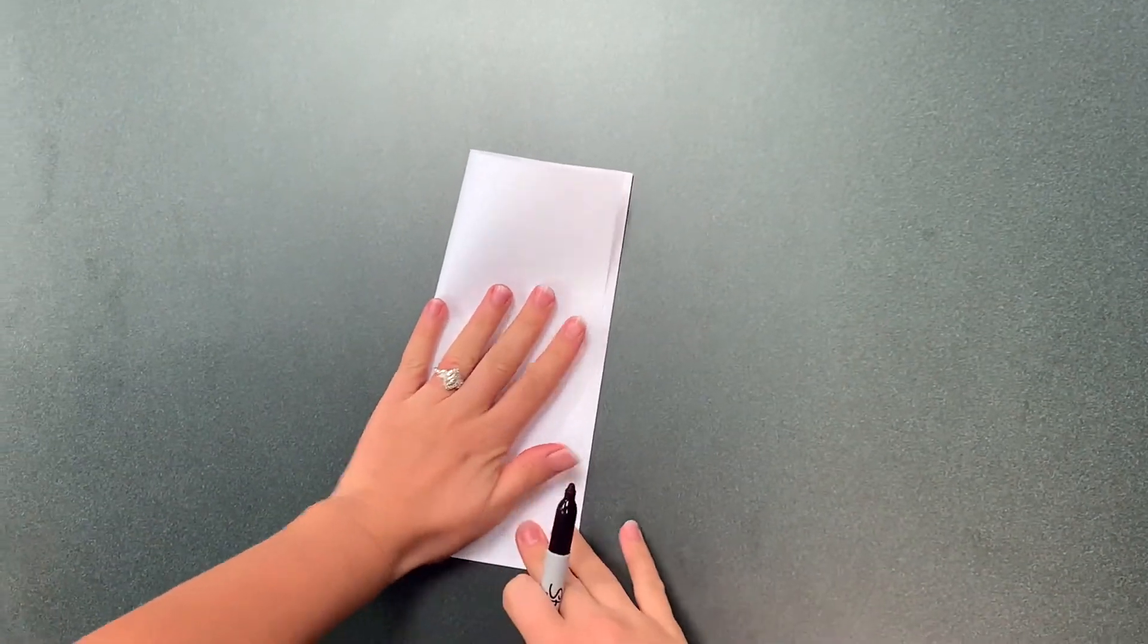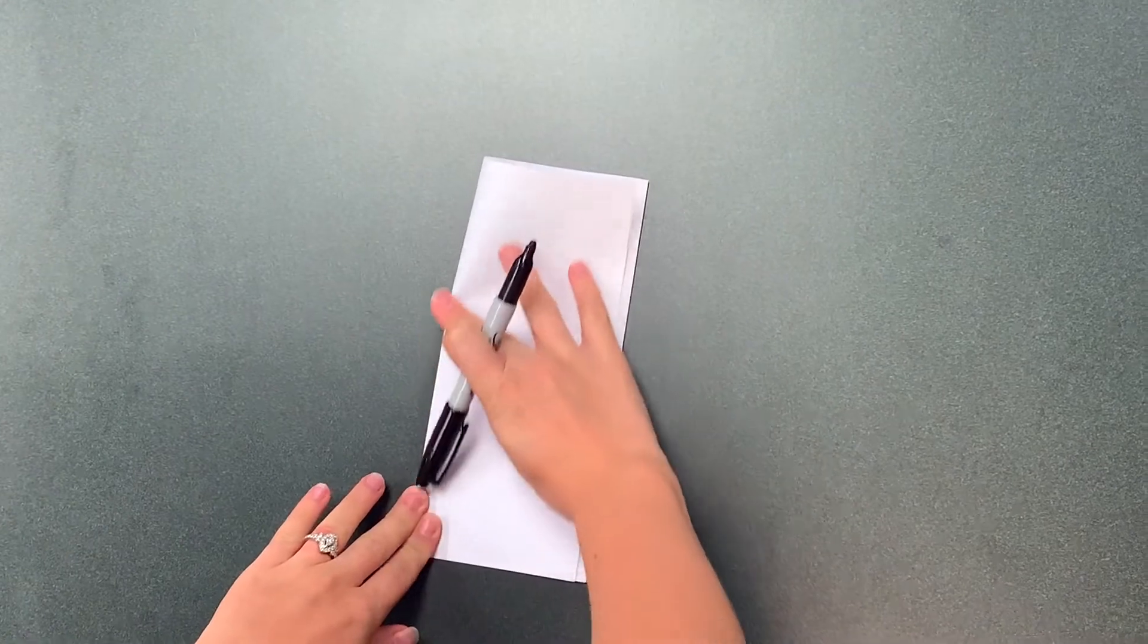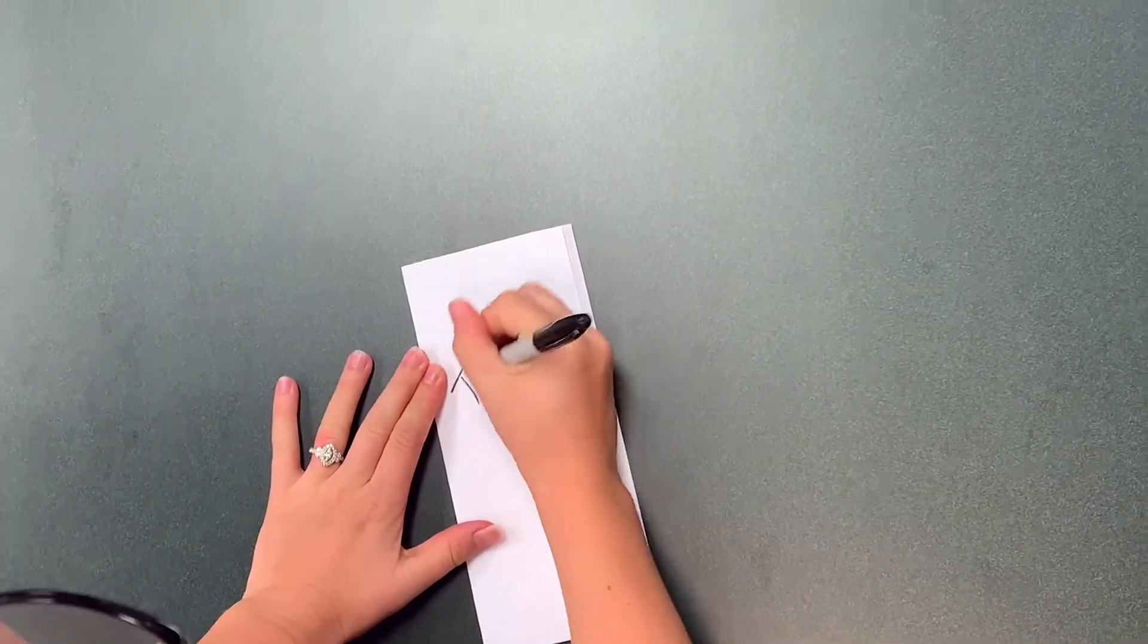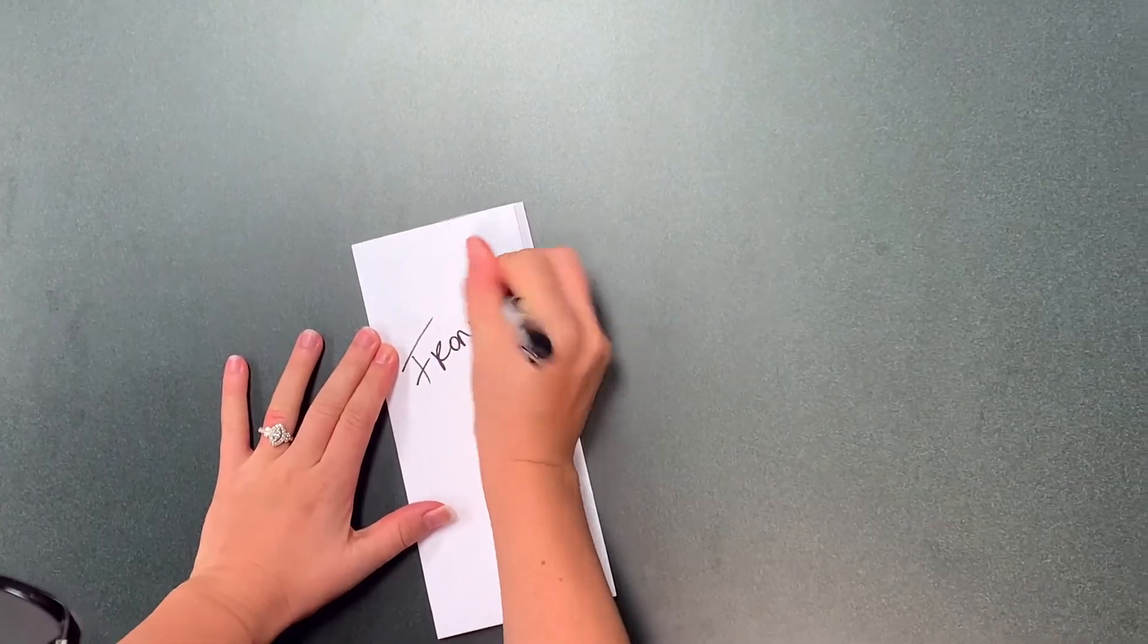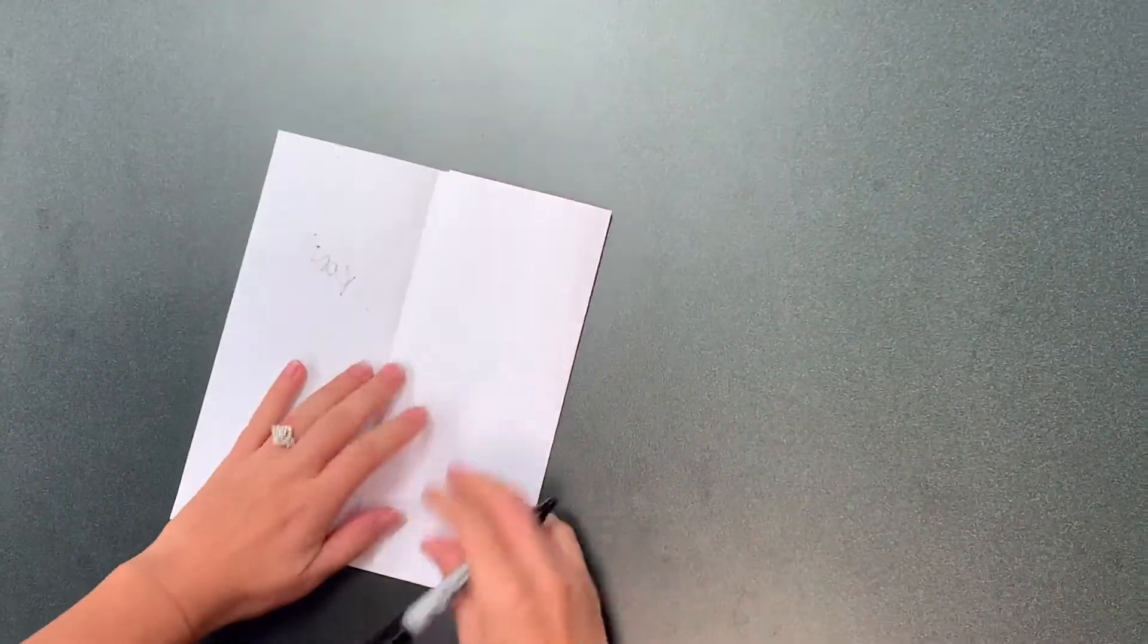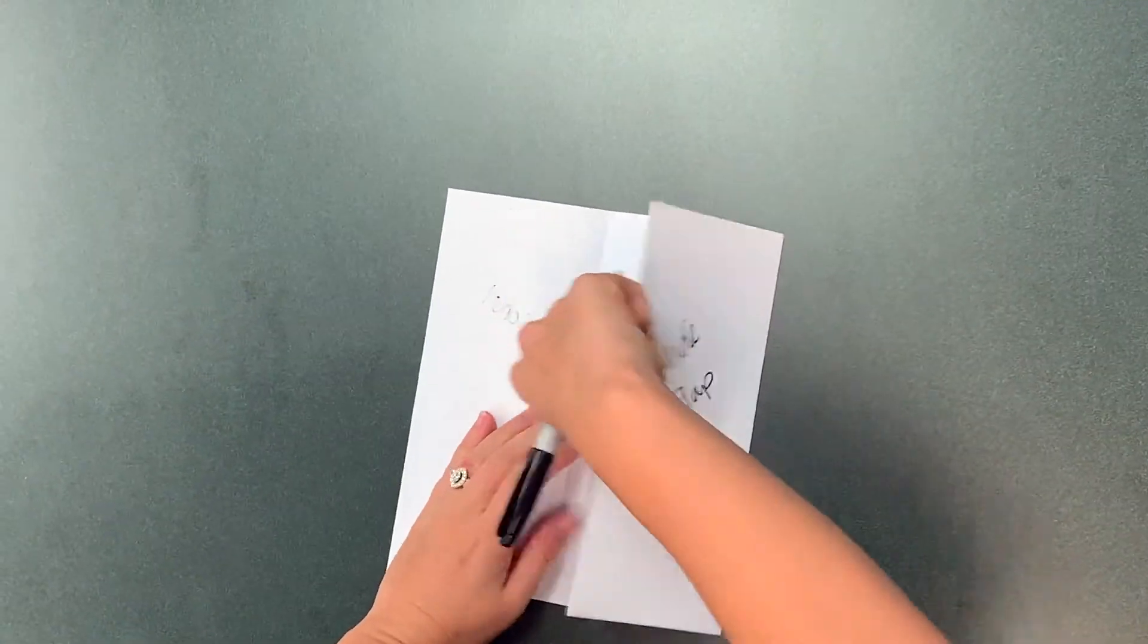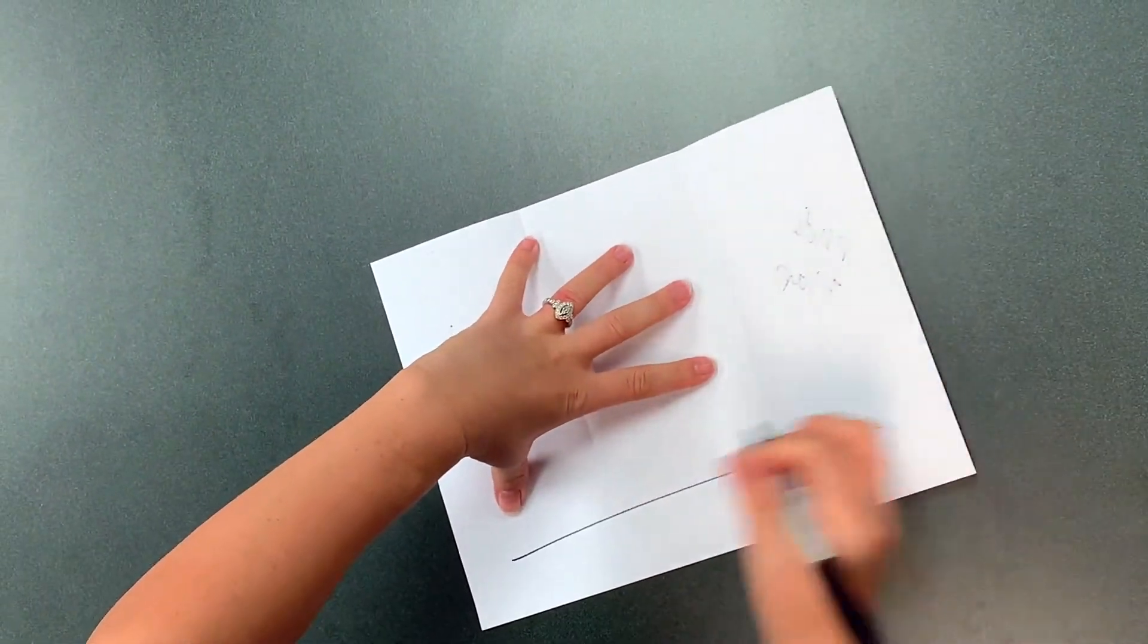The reason this is really important is because you have to use this as a template. So what you're going to do after you fold it is label all the sides: the front, inside flap, just inside.